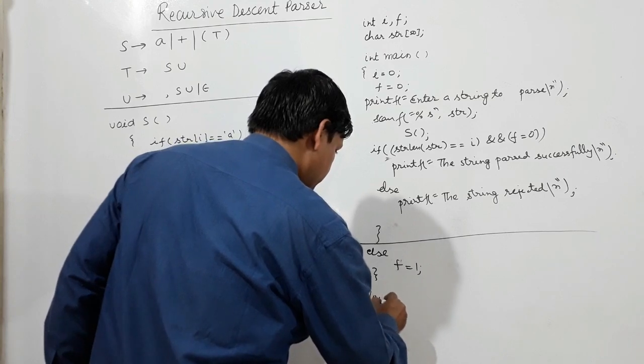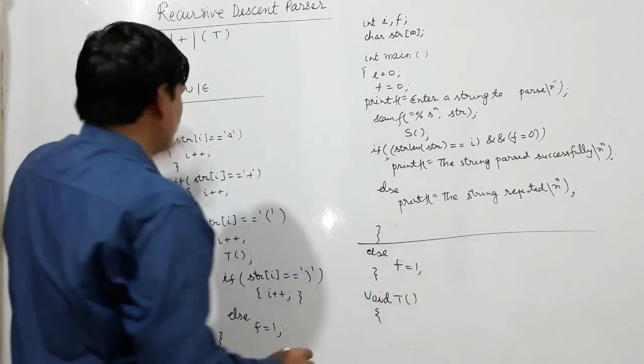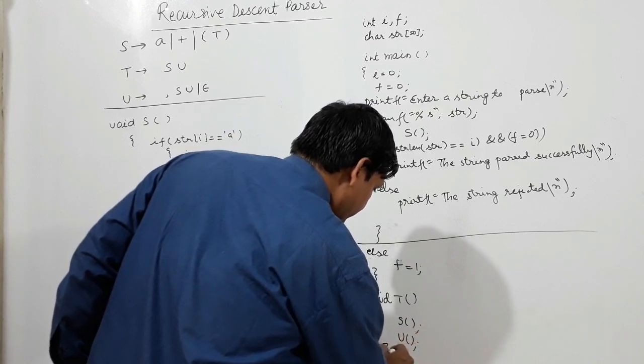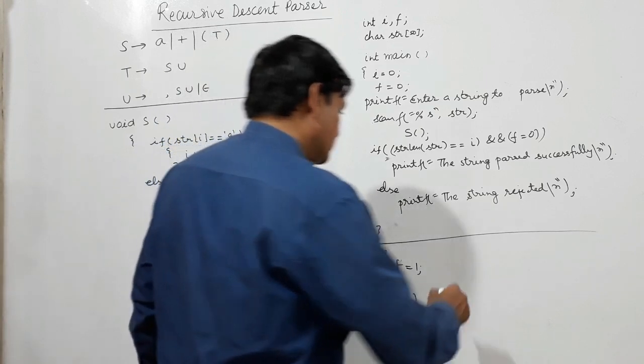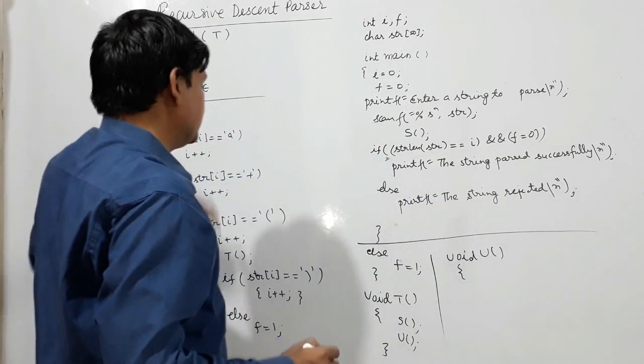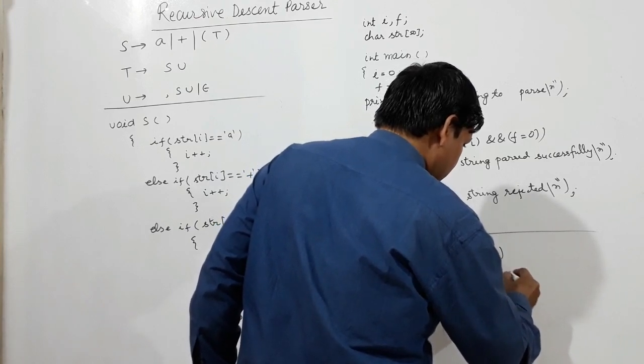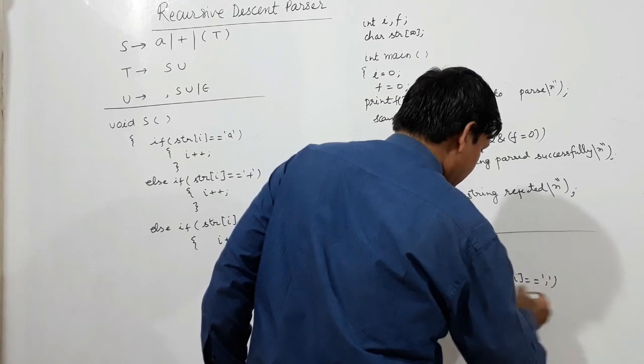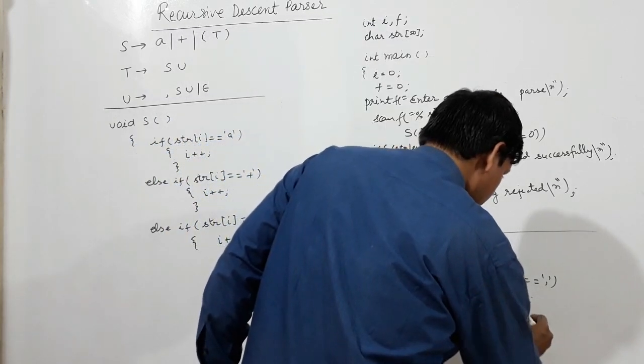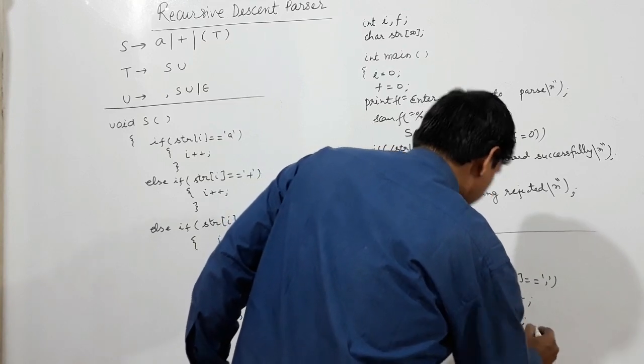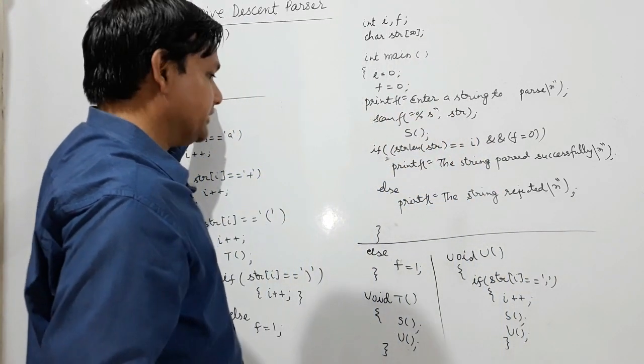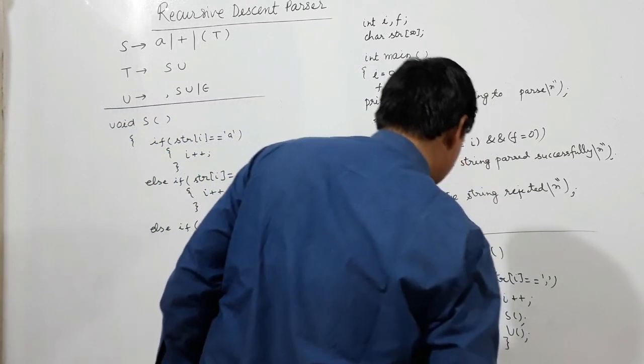But what actually T is doing, void T, T is calling AS and later U. And what actually U is doing now, void U. U is matching with comma. If str i is equal to comma, i plus plus, then S is being called and U is being called. If not starting with comma it's epsilon, so I'm not writing anything which will return. So this is the functions written for this grammar.